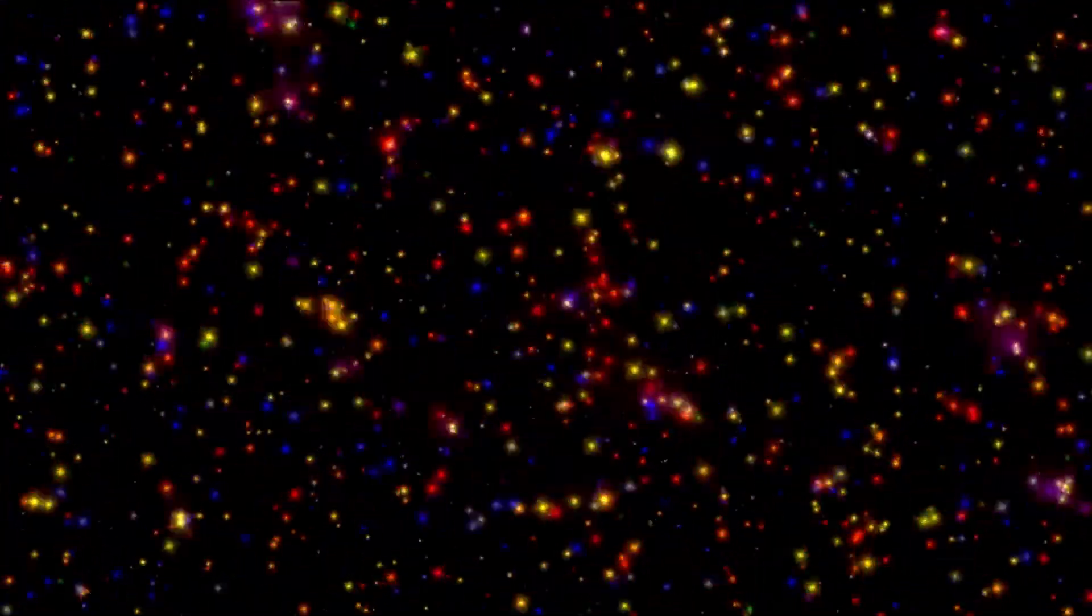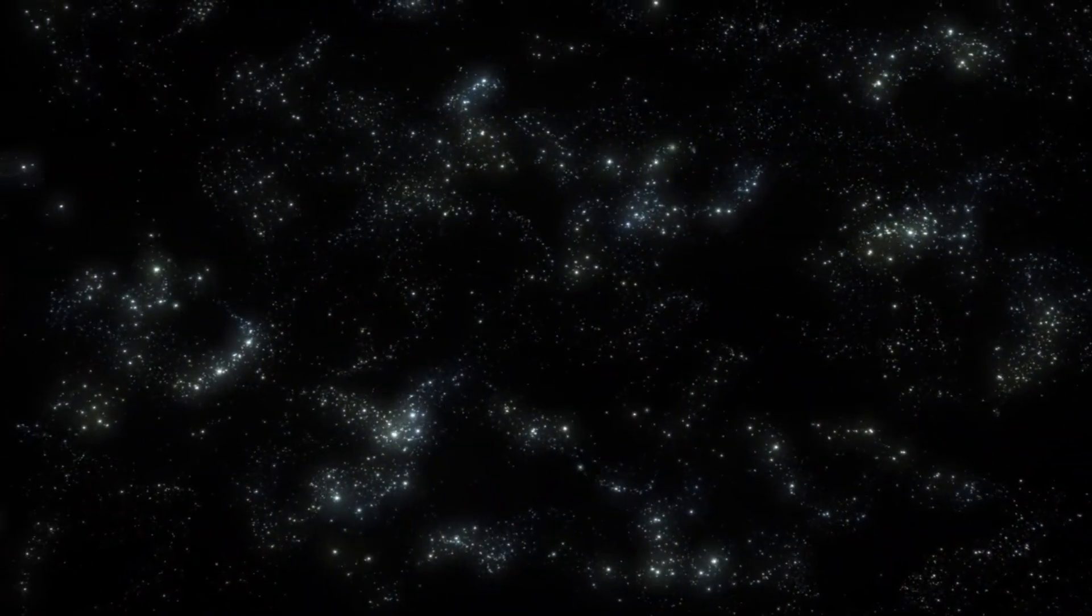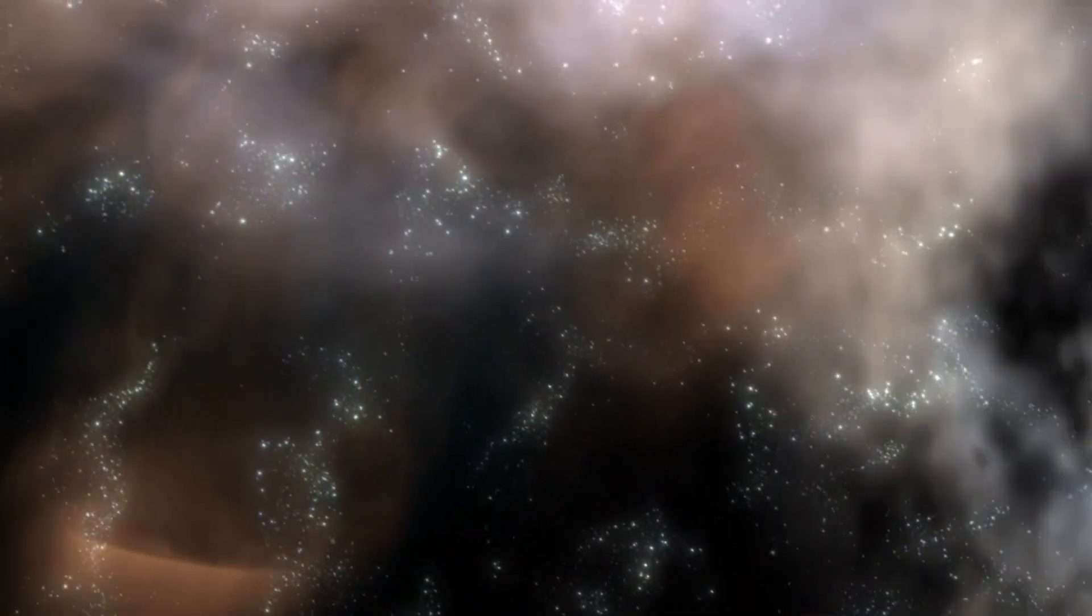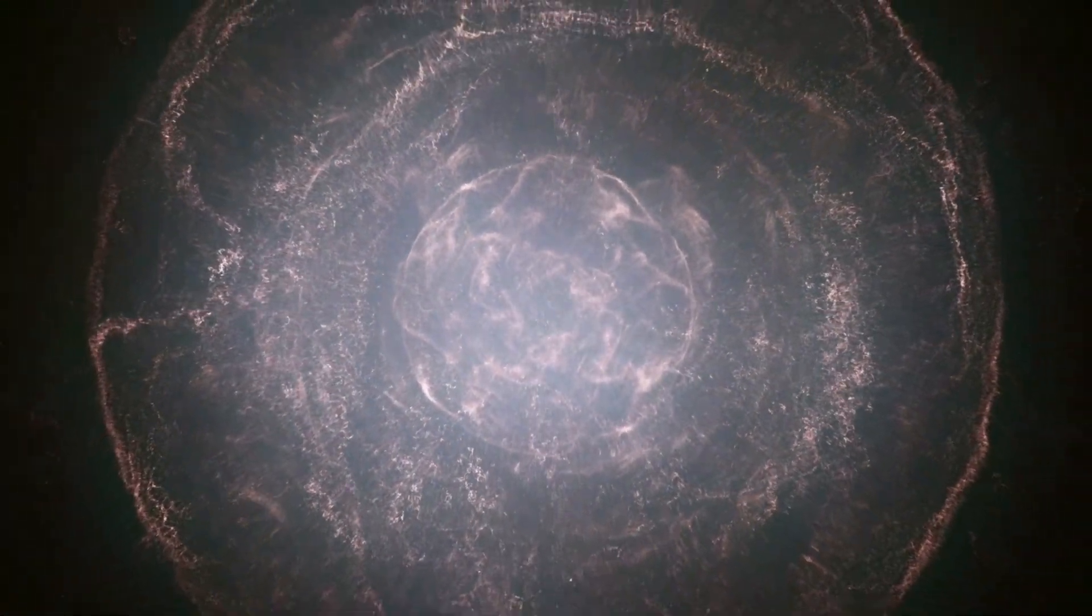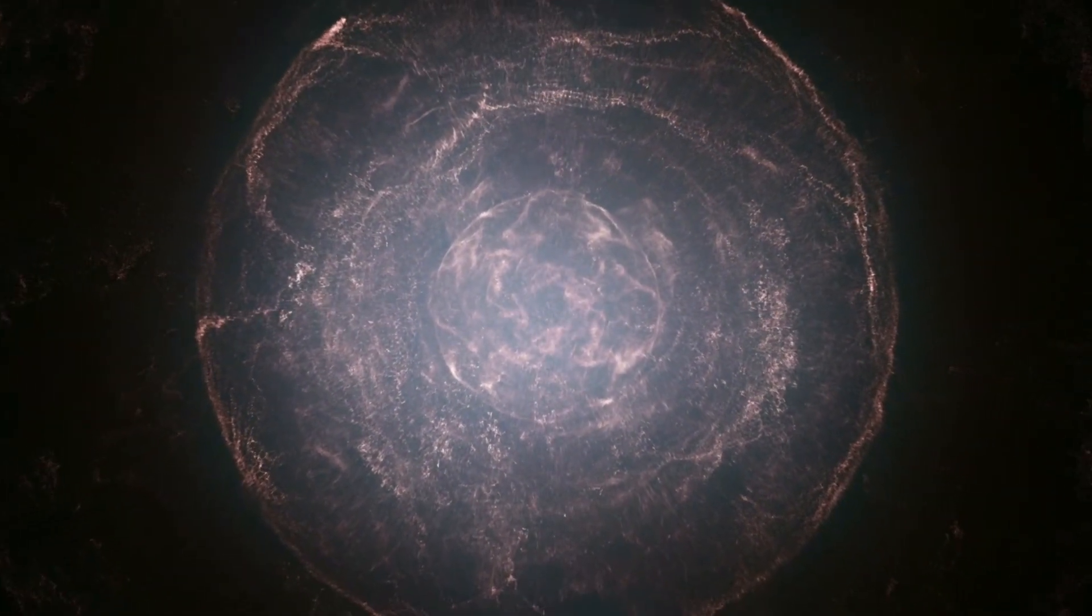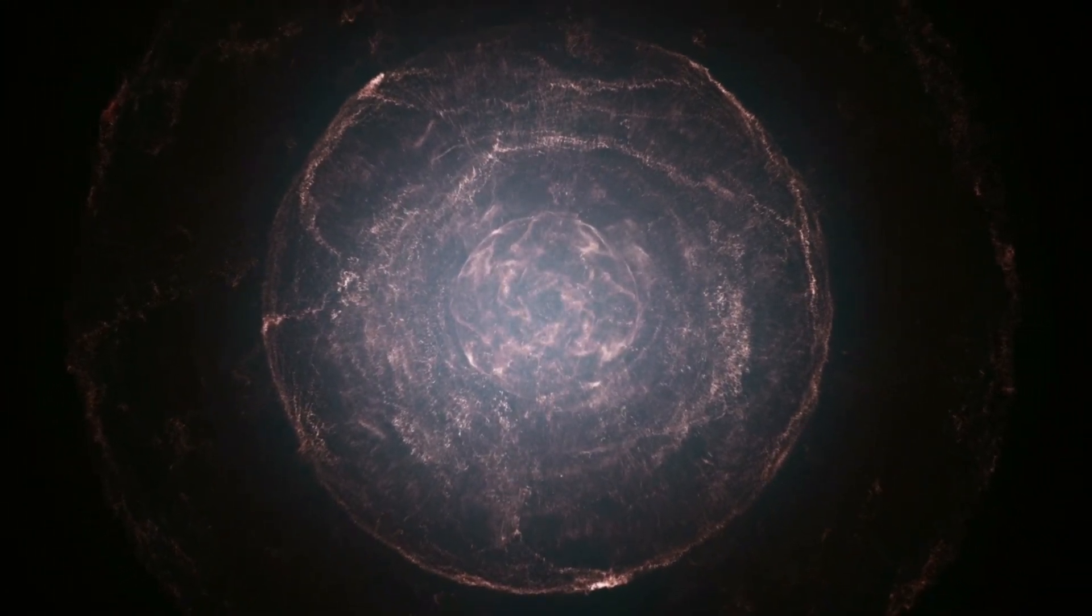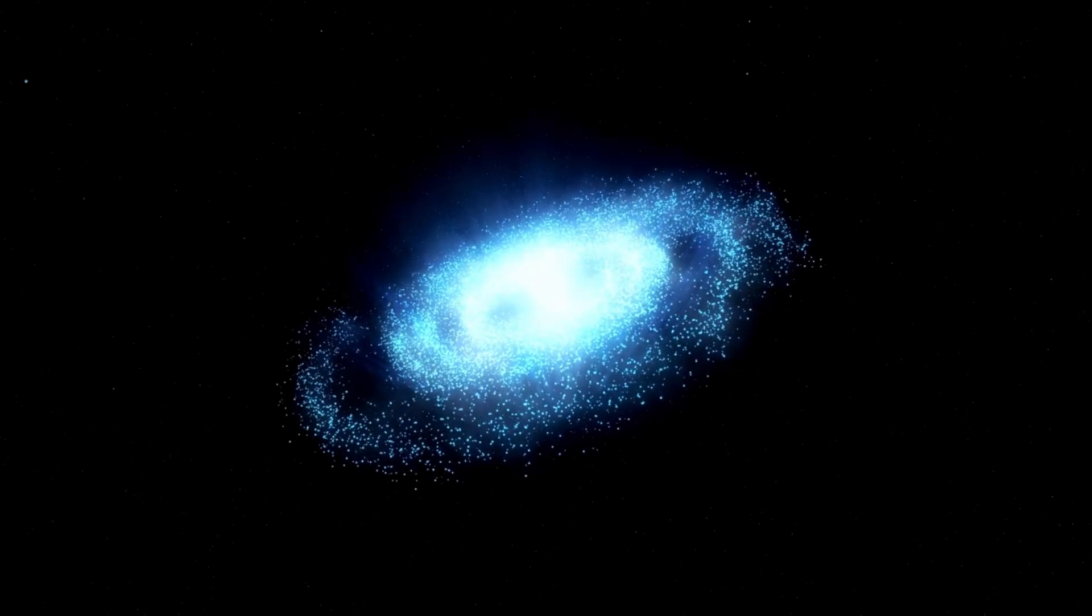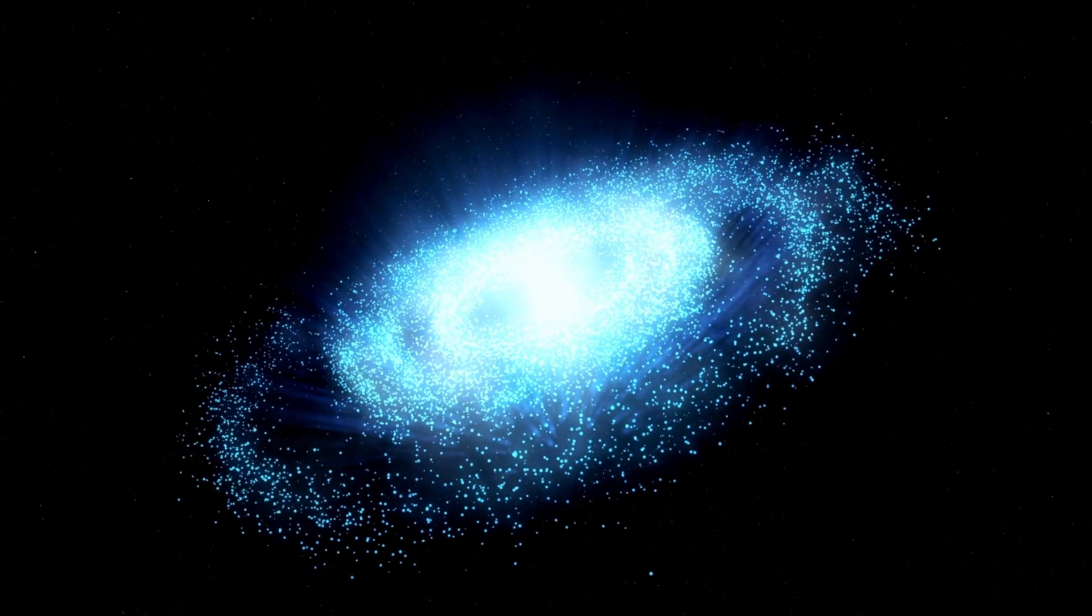Moreover, the smoothness of these galaxies is totally unexpected. According to the Big Bang Theory, galaxies should show irregularities and variations in their structures due to the dynamics of their formation and evolution. However, the images reveal unusually smooth galaxies without the level of complexity and roughness that one would normally expect to see in galaxies of their age. This defies the expected time sequence for the formation and evolution of galaxies within the framework of the Big Bang Theory.